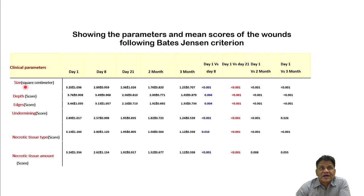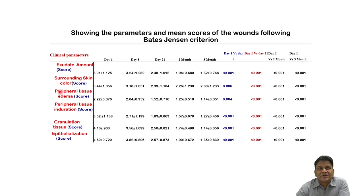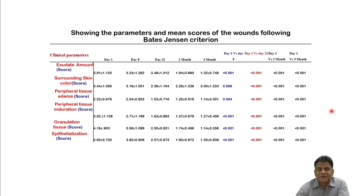Wound assessment parameters — including size, depth, wound edge, undermining, necrotic tissue type and amount — were all significantly reduced from day one to day 21, and again significantly improved from day one to 90 days, except for undermining which was already resolved by day 21 and showed less difference at 90 days.